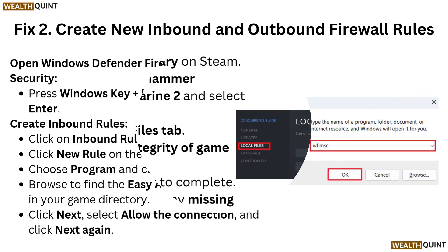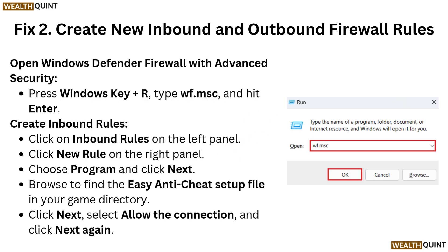Fix two: Create new inbound and outbound firewall rules. Open Windows Defender Firewall with Advanced Security — press Windows key + R, type wf.msc and hit Enter. Create inbound rules: click on Inbound Rules on the left panel, click New Rule on the right panel, choose Program and click Next. Browse to find the Easy Anti-Cheat setup files in your game directory, click Next, select Allow the Connection, and click Next again.